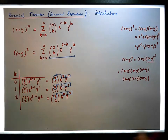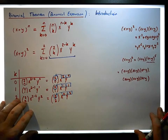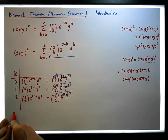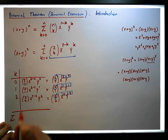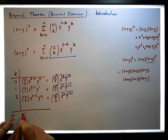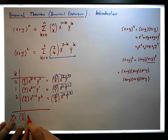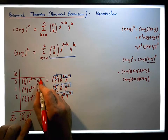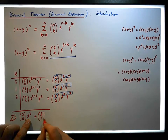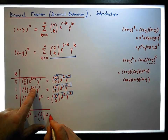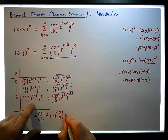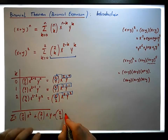Let's have a look at another example. The expansion is the sum of these terms here. So it's 2C0 times x squared times y to the zero — well, y to the zero is just one, so that's just x squared — plus 2C1 times x times y, plus 2C2 times x to the zero, which is just one, times y squared.